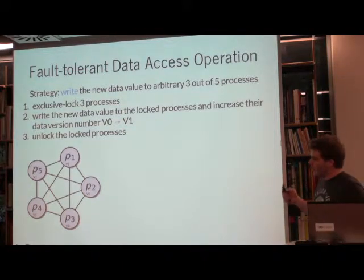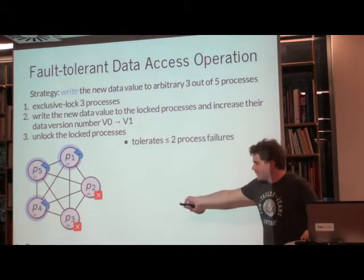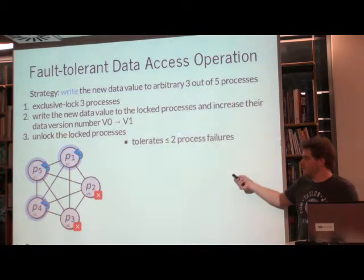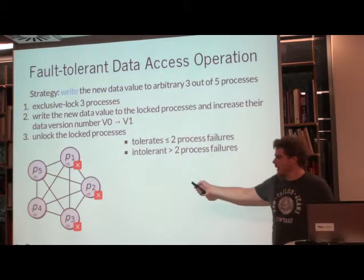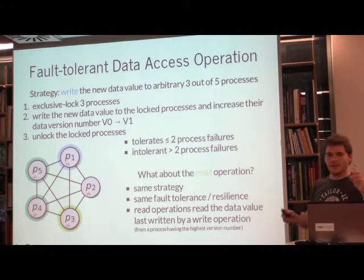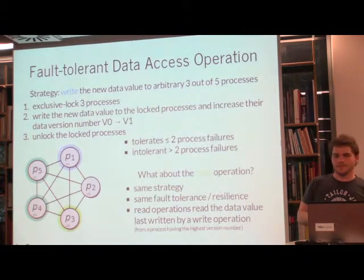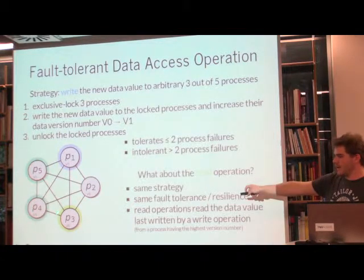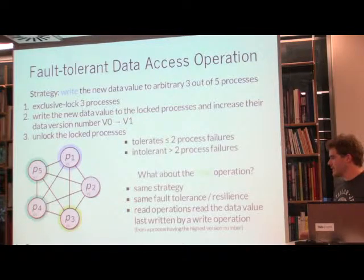We want to be reliable, so if one or even two processes are down, we can still find three others to write to. If three processes fail, we can't do a write operation. For reading, it's basically the same approach — we collect three processes, ask for their version numbers, and the process with the highest version number (version 1) provides its data. The same tolerance and resilience applies.